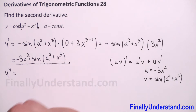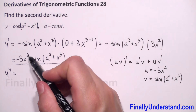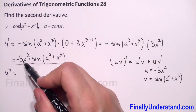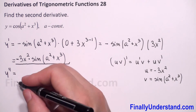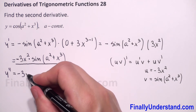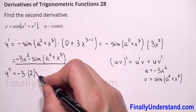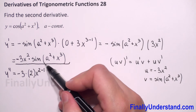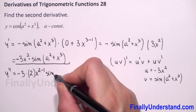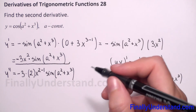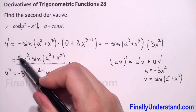So applying the product rule: first we find the derivative of the first expression using the power rule. We copy the constant negative 3, take down the power, giving 2, so we get negative 3 times 2x to the power 2 minus 1. Then we copy the second expression: sine of (a squared plus x to the third power).